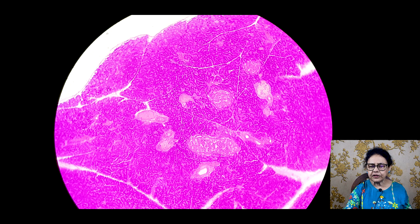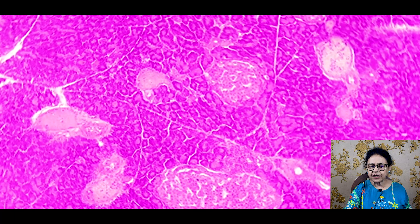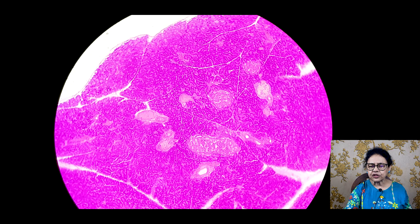And within the lobule, you will see the dark color area. These are the small acini that secrete the exocrine portion of the gland, that is the pancreatic juice.